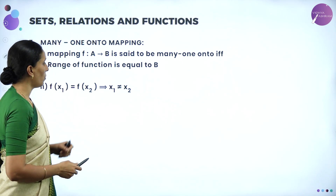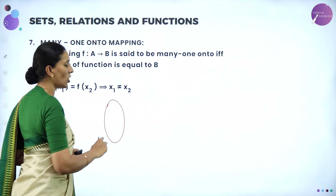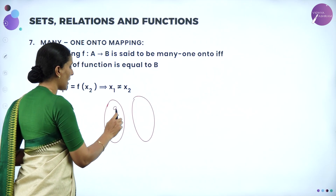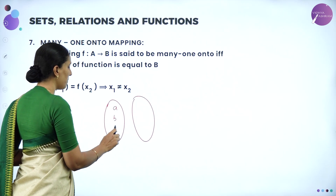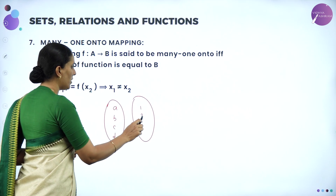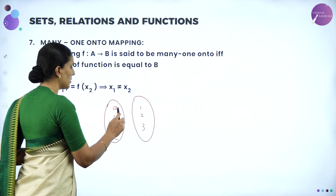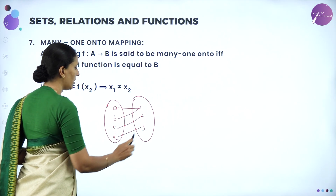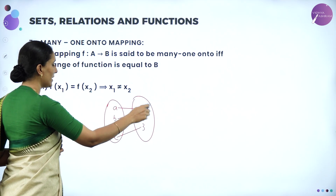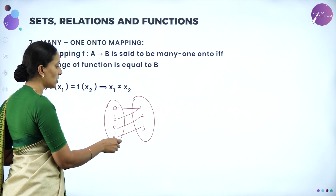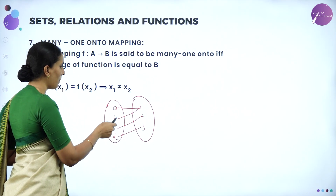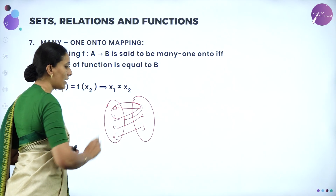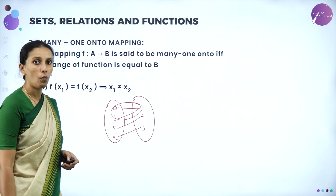Many-one onto mapping does not satisfy one-one condition. For example, with A = {A,B,C,D} and B = {1,2,3}: connect A to 1, B to 1, C to 2, D to 3. Is it onto? Yes — all elements of B have pre-images. Is it one-one? No, because A and B have the same image 1. So this is many-one, not one-one.